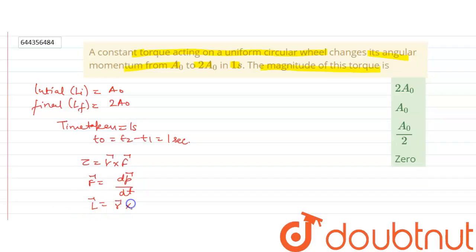Now we know that T0 will be R cross F, and F is dp by dt.